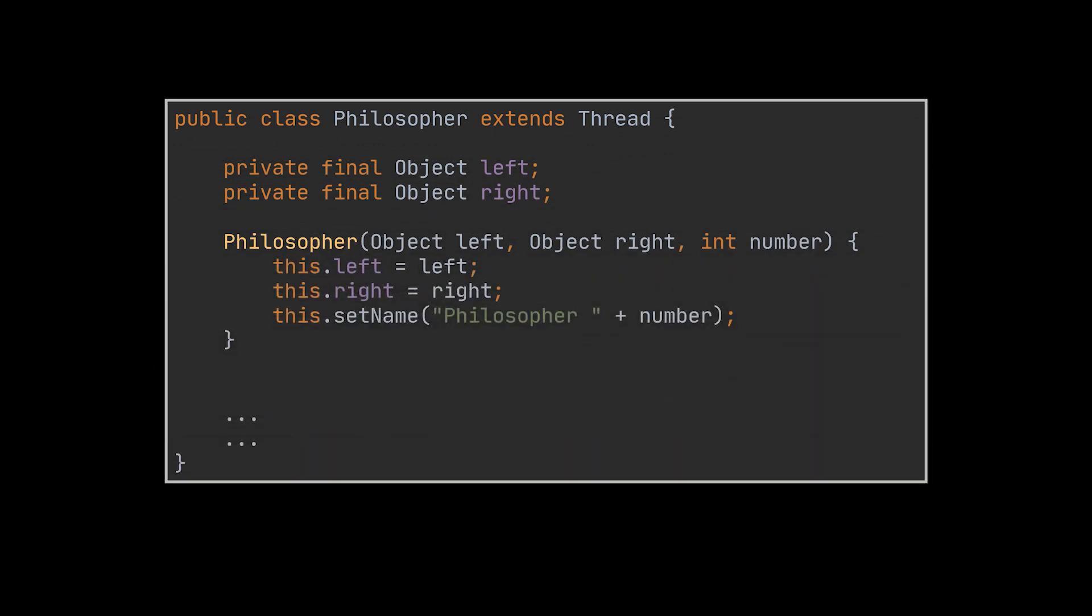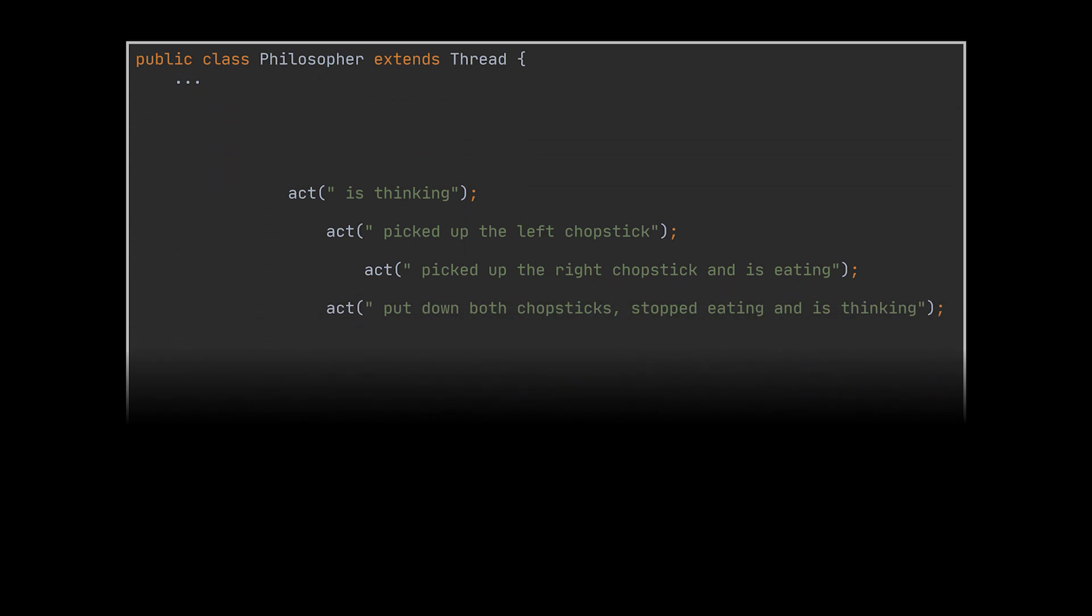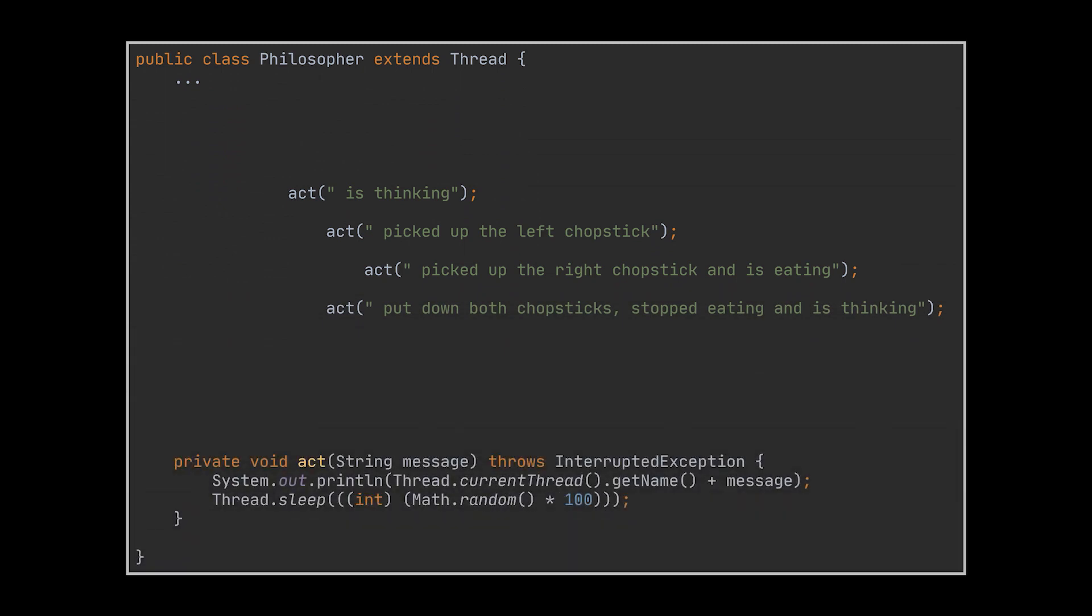Now back to our problem. One implementation could be as we previously mentioned with a little twist. We're going to model each of our philosophers as classes that extend the thread class, where each philosopher has access to two chopsticks on his left and right side. We also have a method that instructs a philosopher to perform an action, i.e., eat, think, or acquire chopsticks in preparation for eating. As shown in the code you see, each action is simulated by sleeping for a random amount of time so that the execution order isn't enforced by time alone.